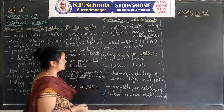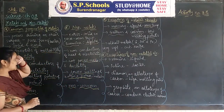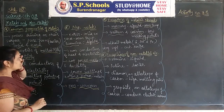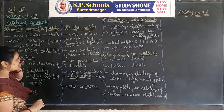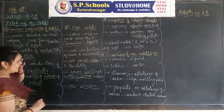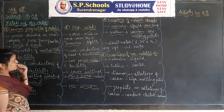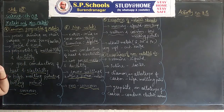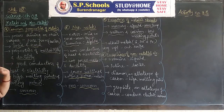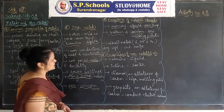Generally, non-metals exist as solids or gases at room temperature, but exception: bromine is liquid at room temperature. Non-metals generally do not possess luster, but iodine, a non-metal, does show luster in its form.